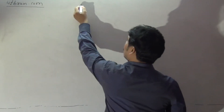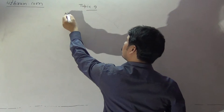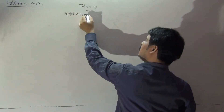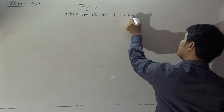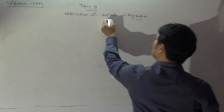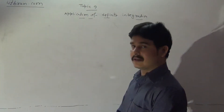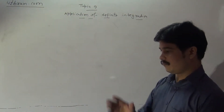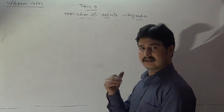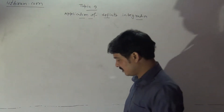Hello students, this is Topic 9: Application of Definite Integration. In this lecture, we explained what is definite integration and how it is connected to the area of a curve — specifically, the area of the region between a curve and the x-axis. Today's topic covers some other applications of definite integration.